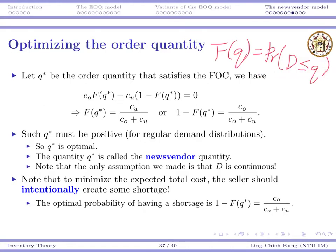So 1 minus F(Q) is the probability to have shortage. There is a positive probability for we to sell out everything in each day. We don't like shortage. But to optimize our decision, we must allow some probability for shortage.